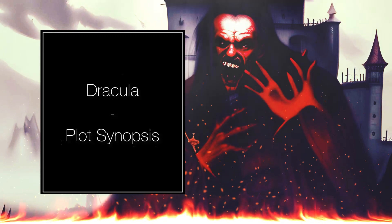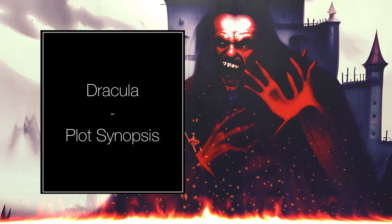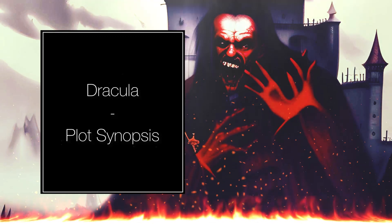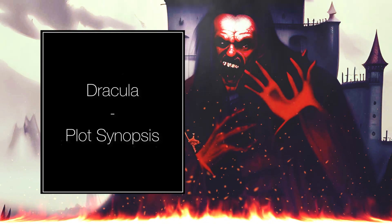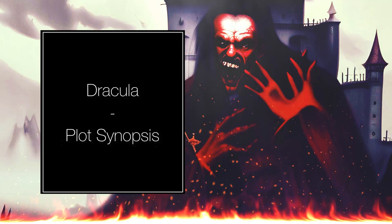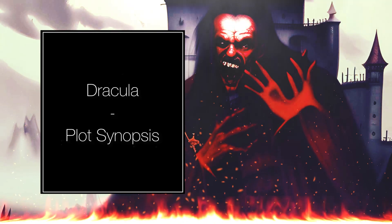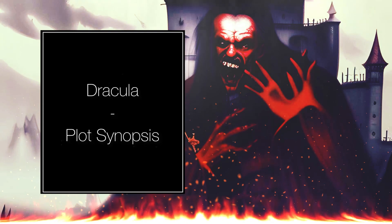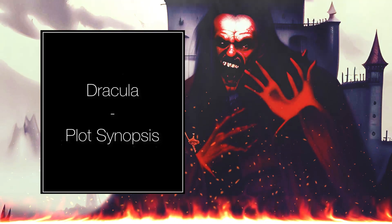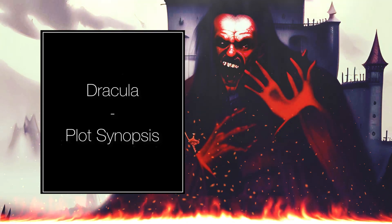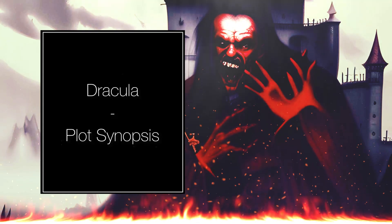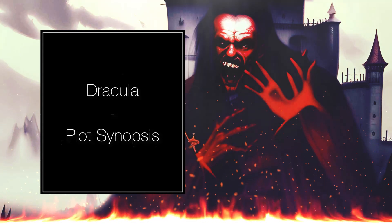After Harker's arrival, he quickly realizes that he has fallen into a dangerous trap and must fight for his life against the evil vampire. As Harker struggles to escape from the castle, he encounters a number of strange and frightening creatures, including three brides of Dracula who feed on the blood of their victims. Despite his valiant efforts, Harker eventually falls under Dracula's control and is left to recover in a convent in Hungary.